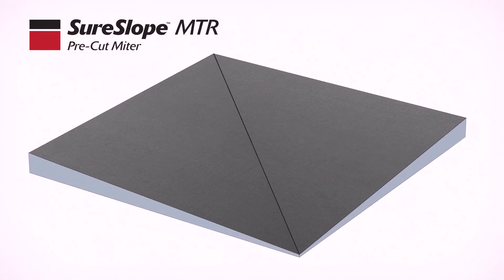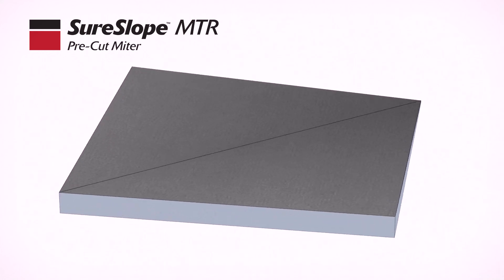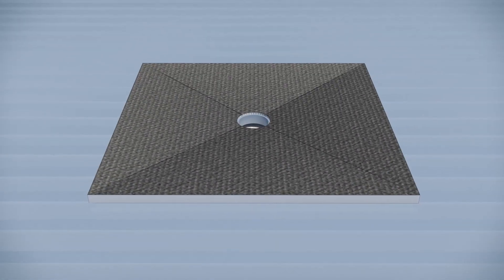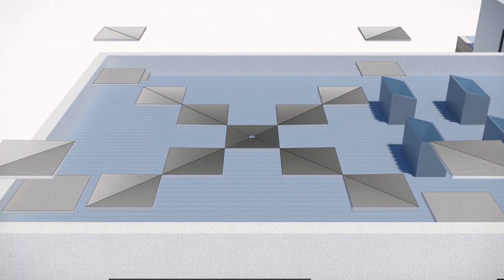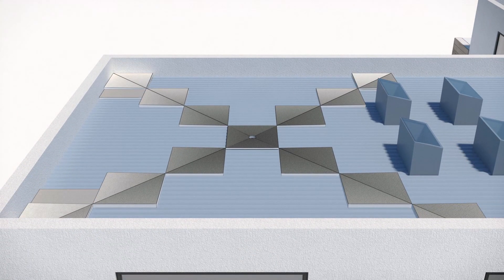After the drain sets are in place, the SureSlope pre-cut miters are installed. SureSlope pre-cut miters were designed to eliminate jobsite waste by 50% when installing hips and valleys.